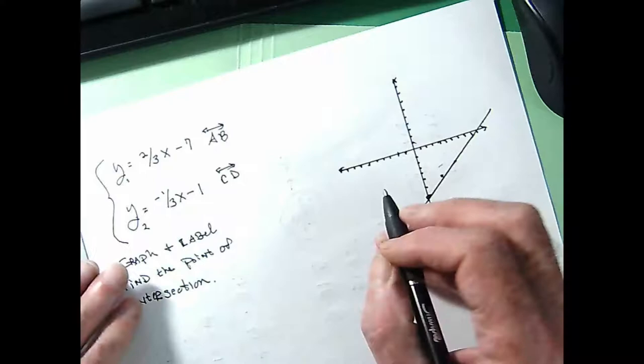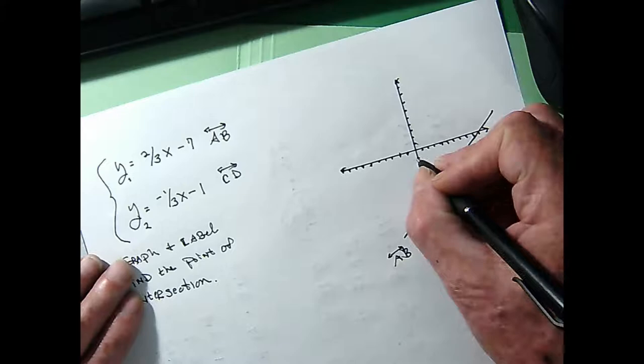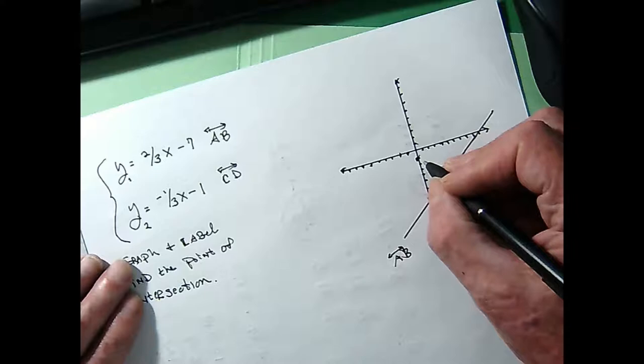Get a good look at line AB. And then we've got this other line CD, and it has a y-intercept of negative 1 and a slope of negative 1/3.